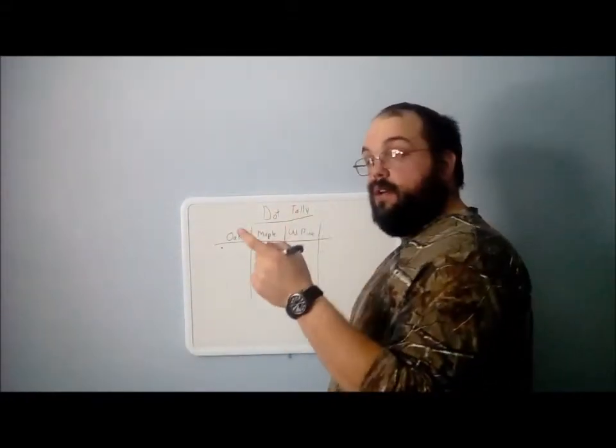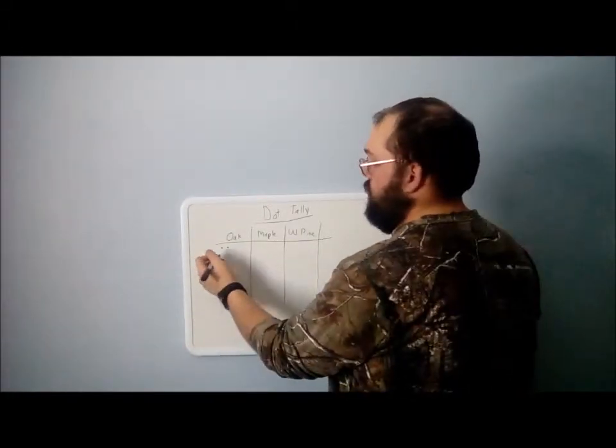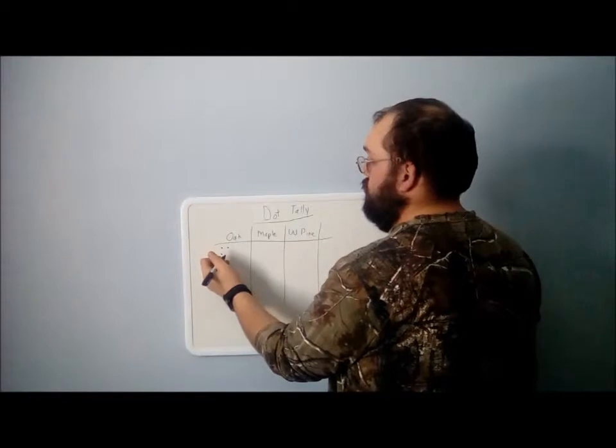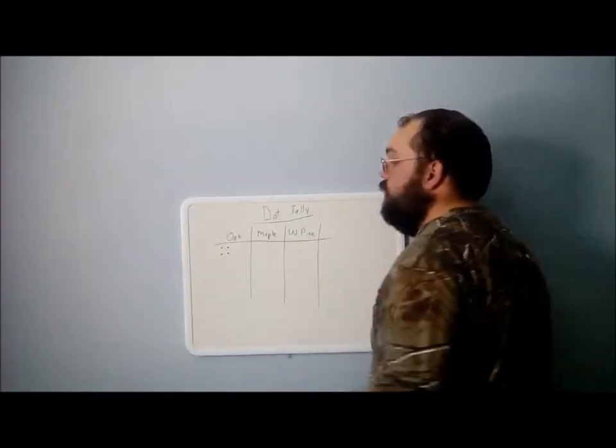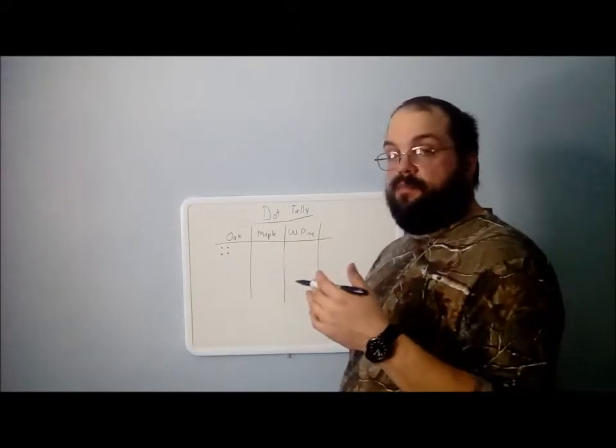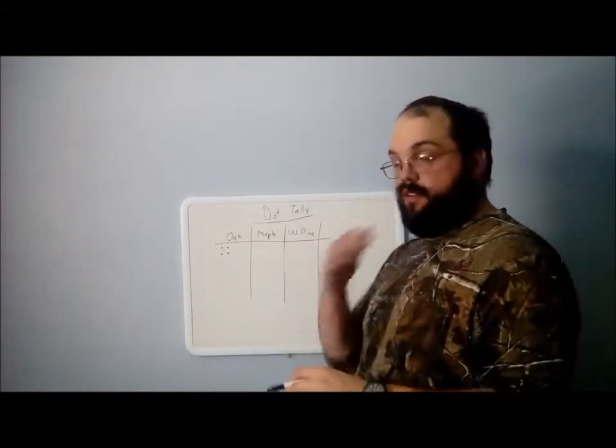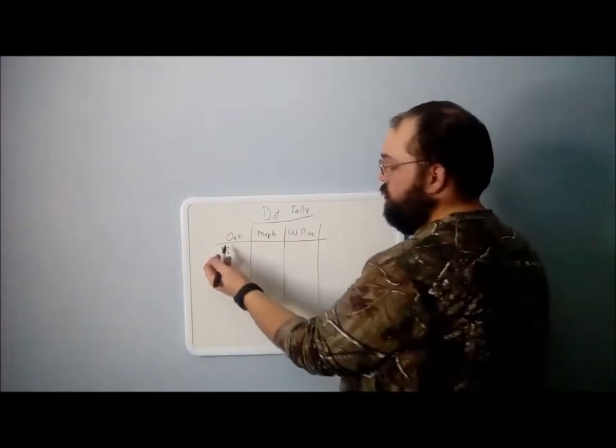So that's one tree. Got tree number two, two dots. Okay, tree three, three dots, tree four, four dots. So now we got four trees there. We're going to expand on this more. Say you got a total, we're going to say you got a total of ten oak trees in this area. So here's your four.